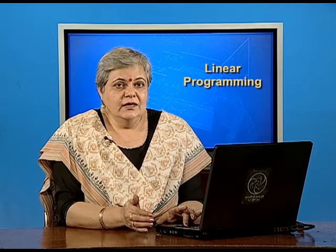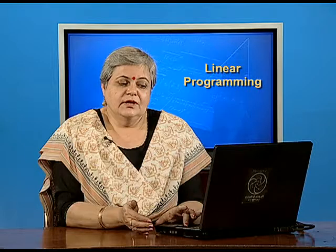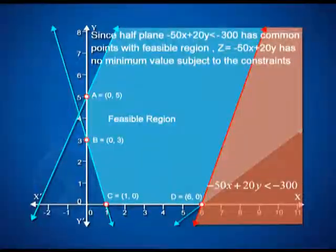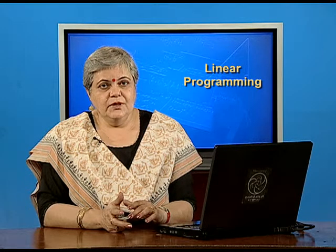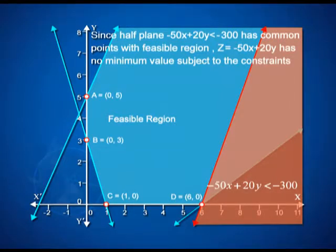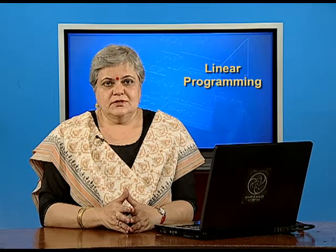Take a moment to plot and see where the shading for −50x + 20y < −300 falls. Unlike previous problems, in this case the shading of that half plane overlaps partly with the feasible region. The key condition requires that this half plane must have no common points with the feasible region — but here there are common points. Therefore we conclude that the half plane −50x + 20y < −300 has common points with the feasible region, and so the objective function z = −50x + 20y has no minimum value subject to the given constraints.